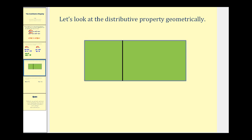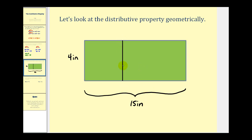Let's take a look at the distributive property geometrically. Let's say that the length of one side is four inches and the length of the entire adjacent side is fifteen inches. If we wanted to break this area into two smaller rectangles, this length here is five inches and this length over here would be ten inches. We can use this to model the distributive property. The area of a rectangle is length times width, so this larger rectangle has dimensions four inches by fifteen inches, giving an area of four times fifteen, or sixty square inches.